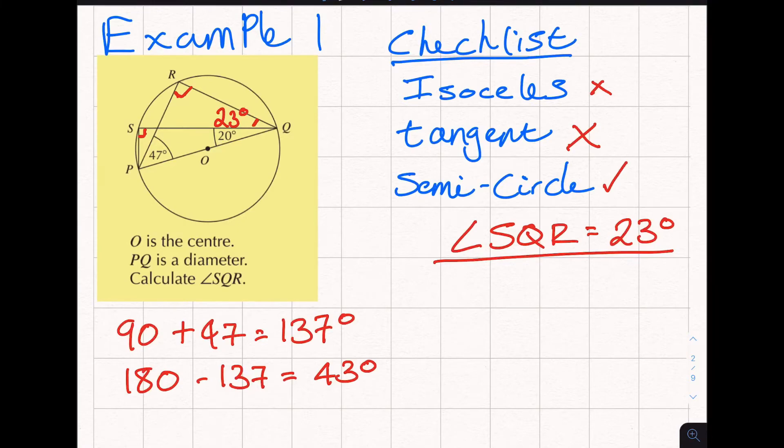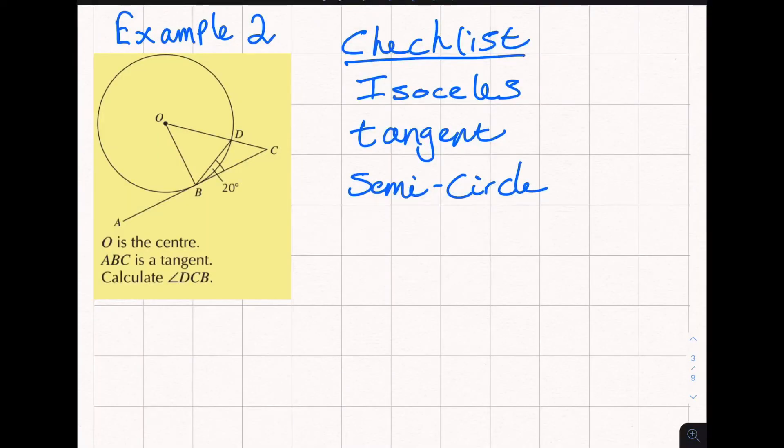Let's look at a second example. We have got ABC as a tangent, calculate DCB. So let's first of all identify DCB. DCB, there it is there. We'll just mark that very briefly and then we go to our checklist. The question mentions tangent so let's look for tangent first. Tangent meets a radius at right angles. So there's 90 there and the other side is going to be 90 so I can immediately know this angle because that plus 20 is 90 so we've got 70 degrees.